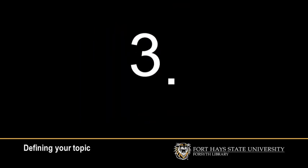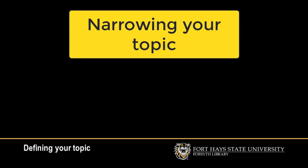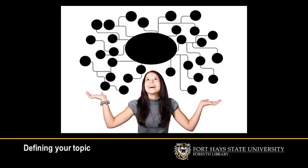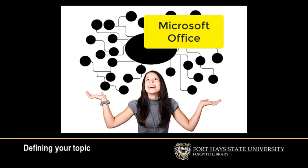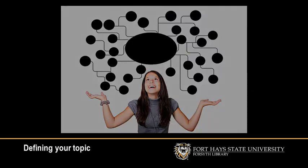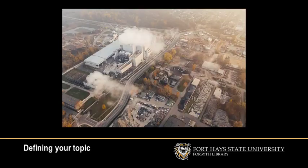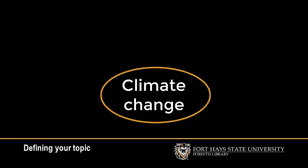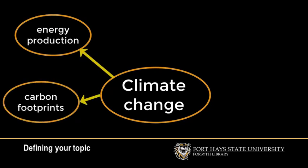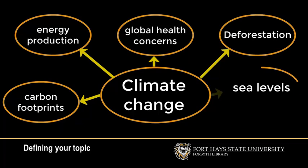Once you have a general grounding in a topic, it is time to get specific. One way to get specific is to create a mind map using Microsoft Office, Coggle, MindMup, or even just drawing it out on a piece of paper. For example, if you had to research something involving climate change, your background research would tell you that climate change can be broken down into energy production, carbon footprints, global health concerns, deforestation, and rising sea levels.